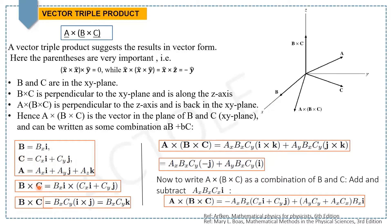Now taking B × C, we have i × j = k, so B × C = Bx Cy k.